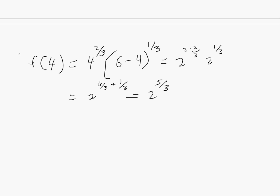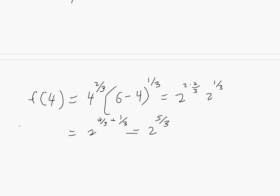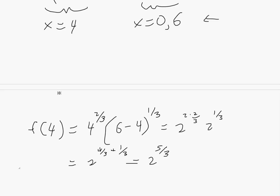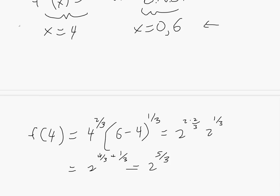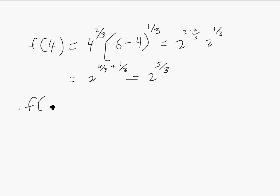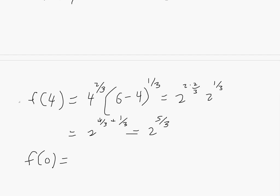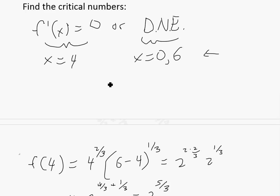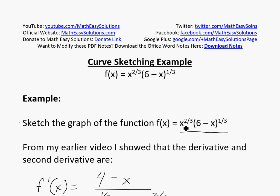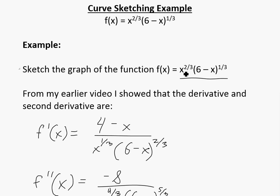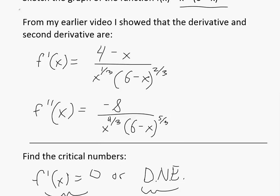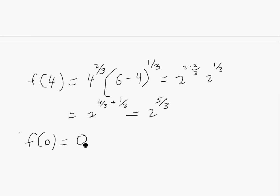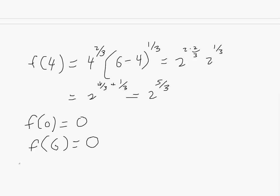You can see more on power functions like this in the video linked below. Next, f(0): plugging in 0 gives 0 times whatever, which is 0. And f(6): since there's a (6 minus x) factor, plugging in 6 also gives 0. So f(0) = 0 and f(6) = 0.